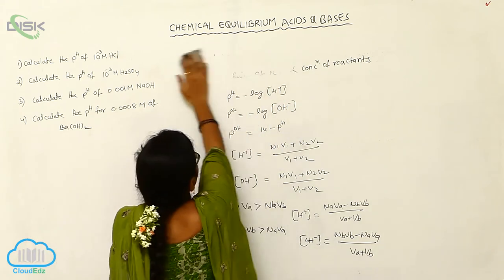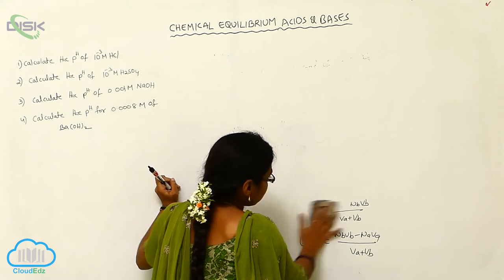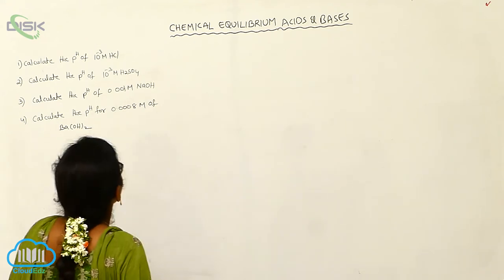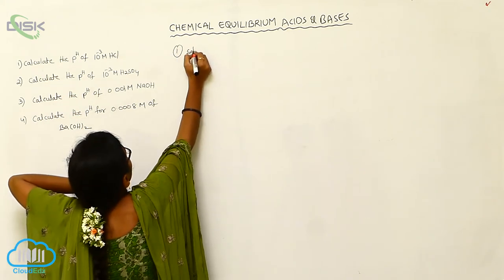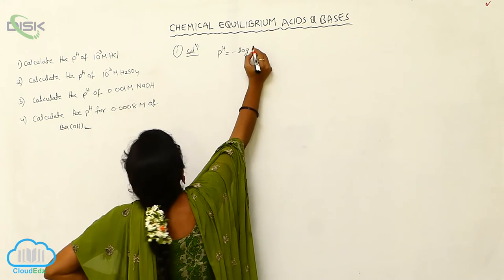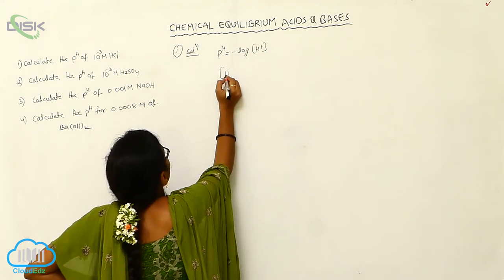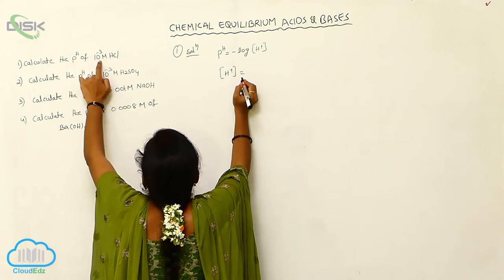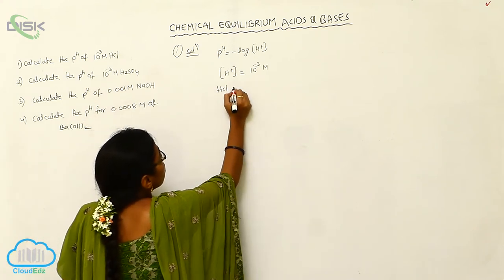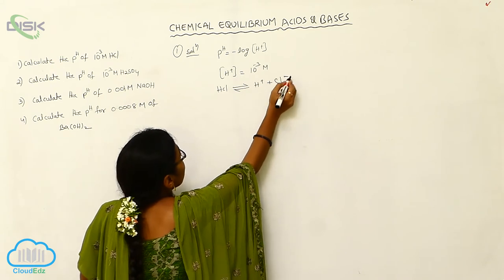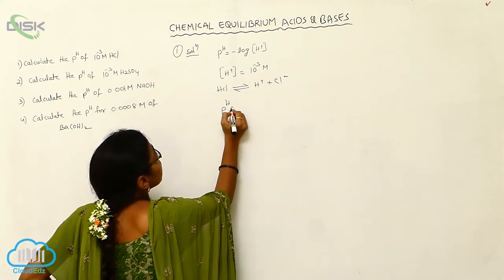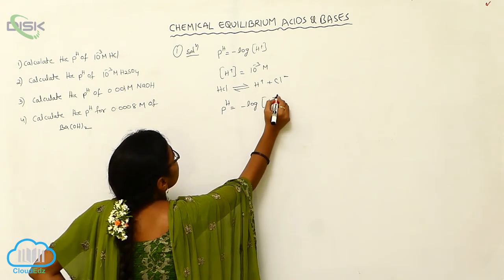First problem: calculate the pH of 10⁻³ M HCl. For the calculation of pH, we use pH = −log[H⁺]. We know that when HCl undergoes dissociation, it forms H⁺ and Cl⁻. The concentration of H⁺ is therefore 10⁻³ M.